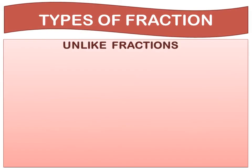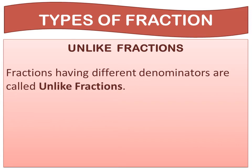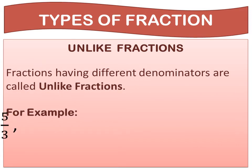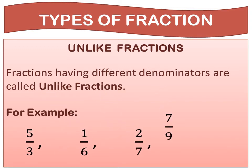Our next topic is unlike fractions. Fractions having different denominators are called unlike fractions. For example, 5 upon 3, 1 upon 6, 2 upon 7, and 7 upon 9. In these examples, all the denominators are not the same, so they are all unlike fractions.